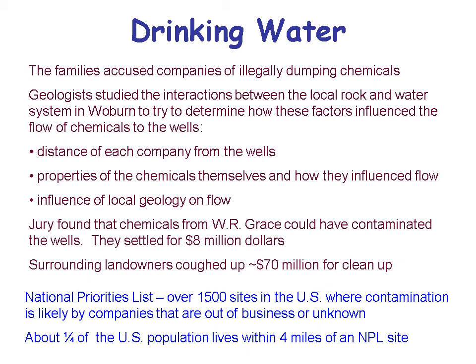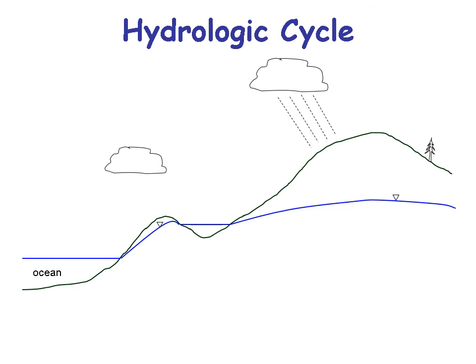Geologists figured out the distance of each company from the wells, determined the properties of the chemicals in the water, and looked at the local geology. A company ended up settling, and surrounding landowners along with the EPA coughed up money to clean it up. There is a national priorities list with sites around the U.S. where contamination is a problem, and a fourth of the U.S. population lives within four miles of one of those sites.